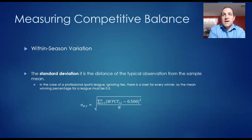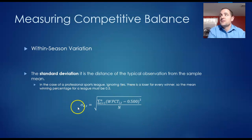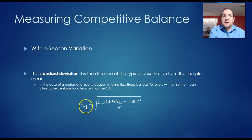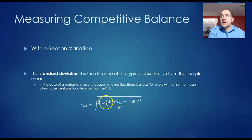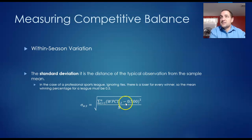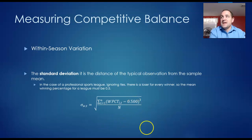If you look at the equation here for how to measure the standard deviation — the Greek symbol sigma — W represents winning percentages and T is time. You have the sum of each N teams in a league. The winning percentage W-sub-i,T is the winning percentage of the i-th team in year T, minus the distance from the average, which is 0.500 or 50%, and N is the number of teams in a league.